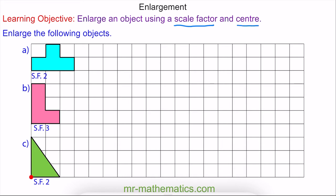We are going to begin with question A and enlarge this shape by a scale factor of 2. This means we enlarge every edge so it is double the size. So this length of 1 is enlarged to a length of 2, and the base which has a length of 3 on the object has a length of 6 on the enlarged image. This length which is 1 on the object becomes 2 on the image, and I can go around the entire shape making every length twice as big.